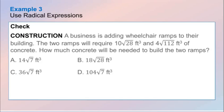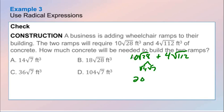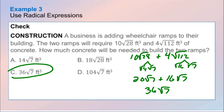Two ramps will require 10 square root of 28 cubic feet and 4 times the square root of 112 cubic feet of concrete. How much concrete will be needed? We take 10 square root of 28 and add 4 square root of 112. For 28: the square root of 4 times the square root of 7 gives us 20 square root of 7. For 112: the square root of 16 times the square root of 7 gives us 16 square root of 7. Adding them together: 20 plus 16 is 36 square root of 7, which matches choice C.